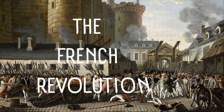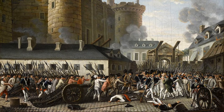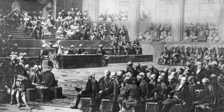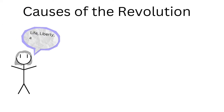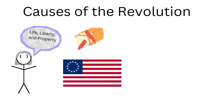The French Revolution was fought between 1789 and 1799. It was an uprising of the commoners to overthrow the old monarchy of France. There were many causes of the French Revolution, including ideas spreading from the Enlightenment, food shortages throughout France, the American Revolution, and the estate system.